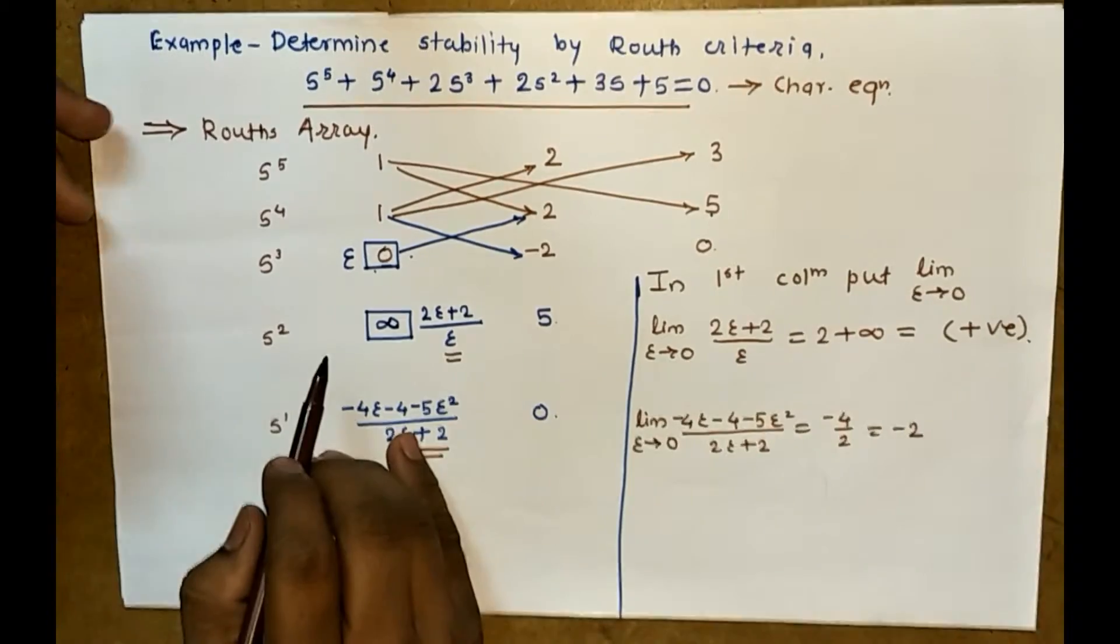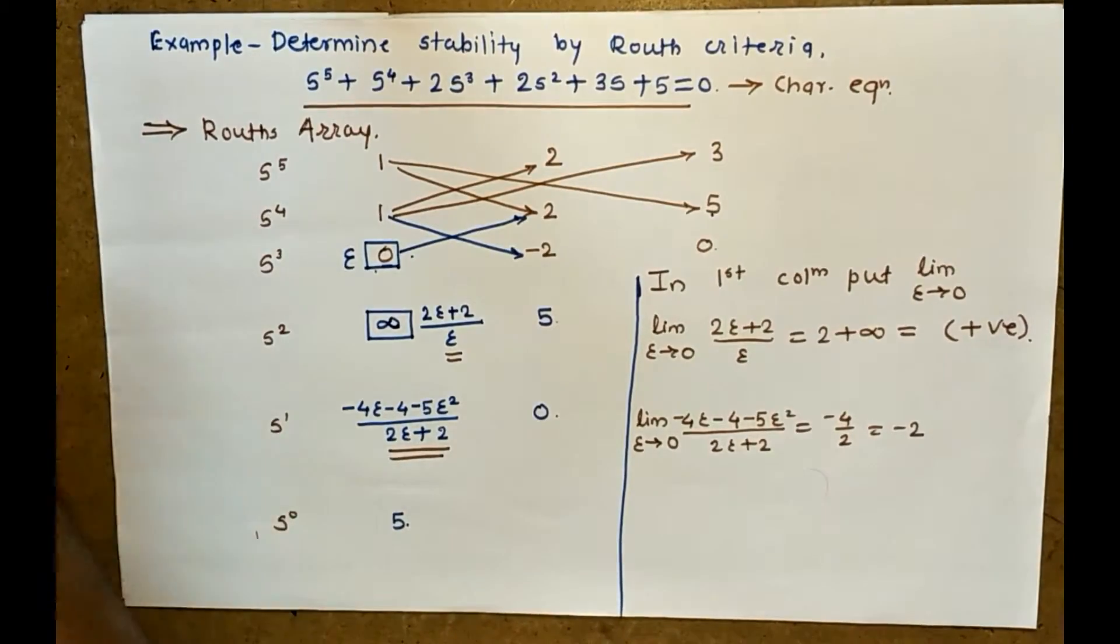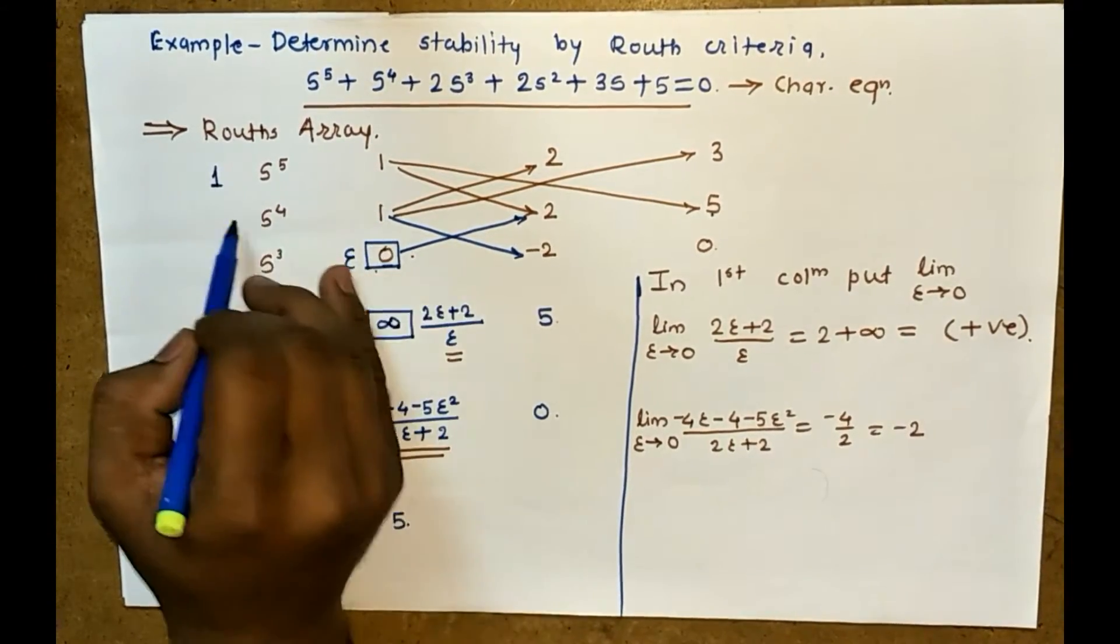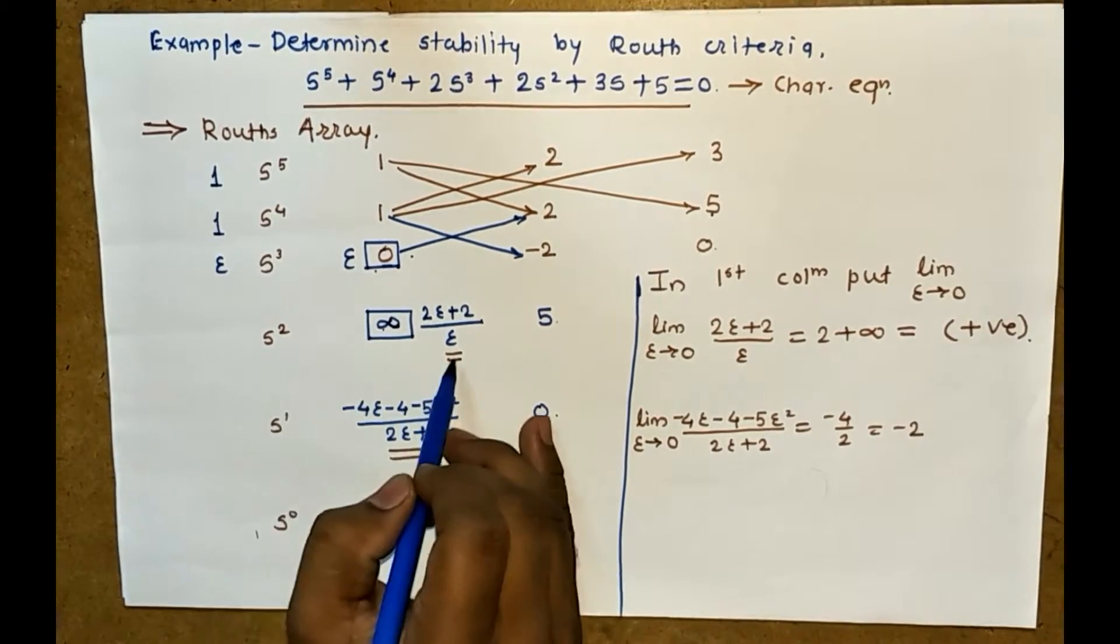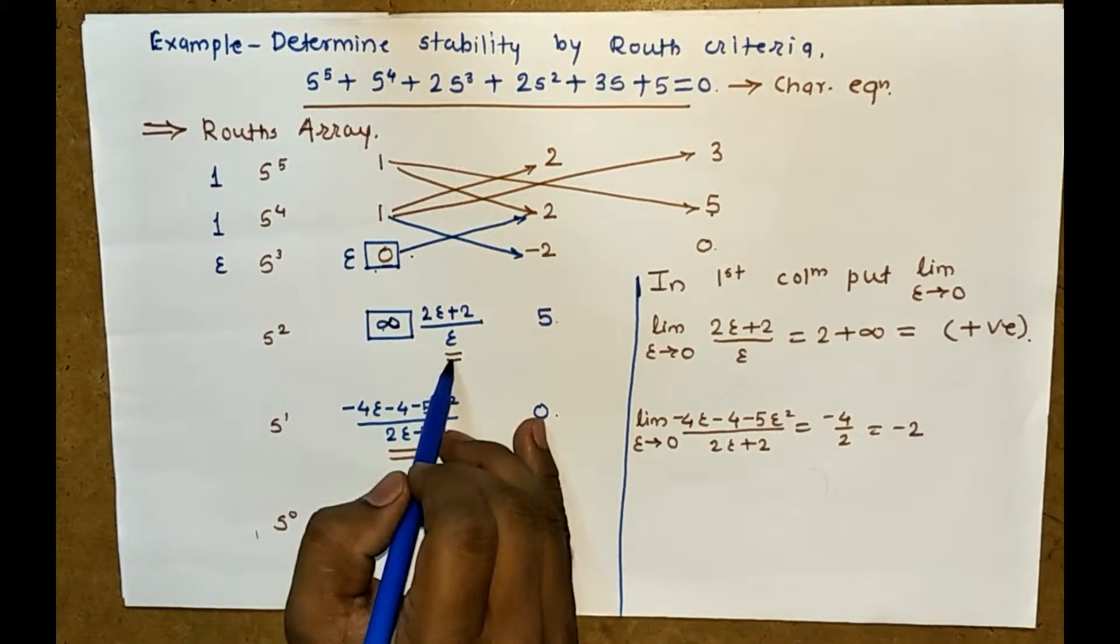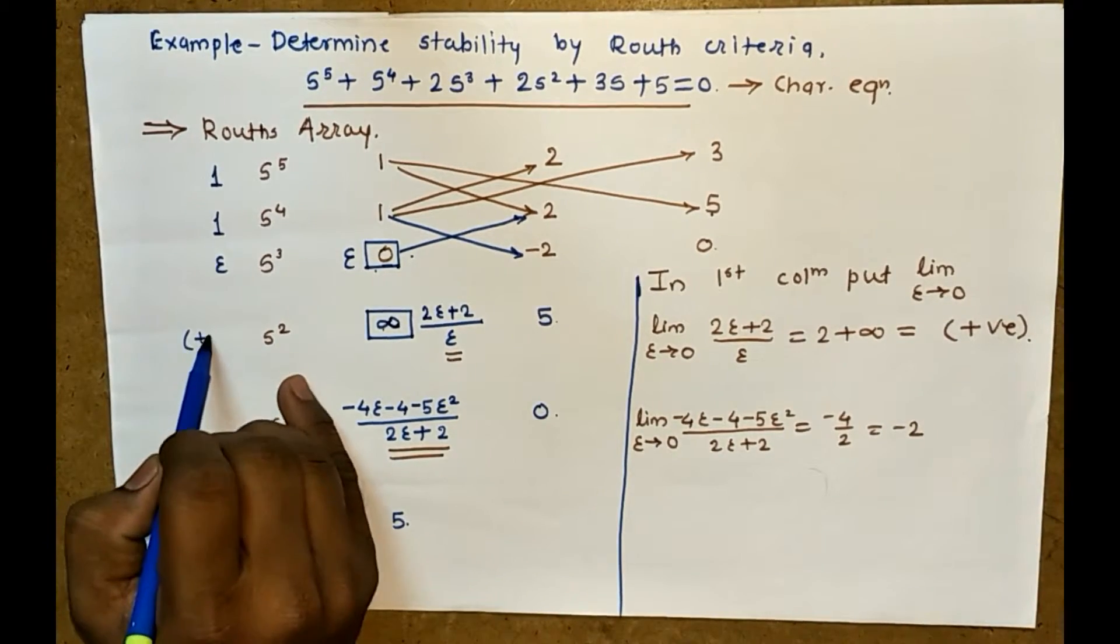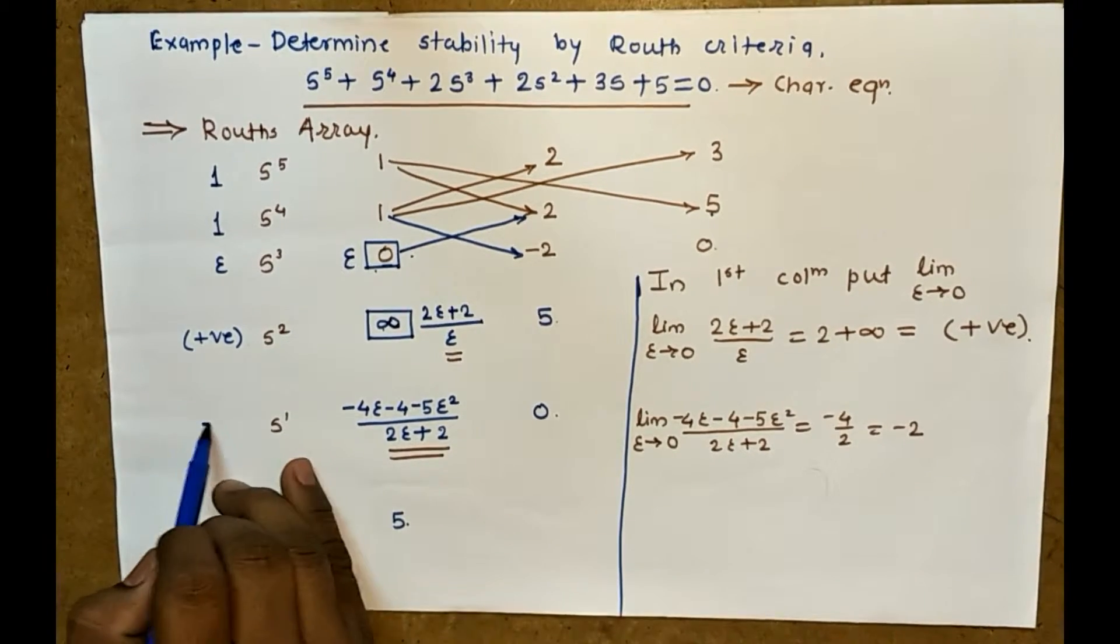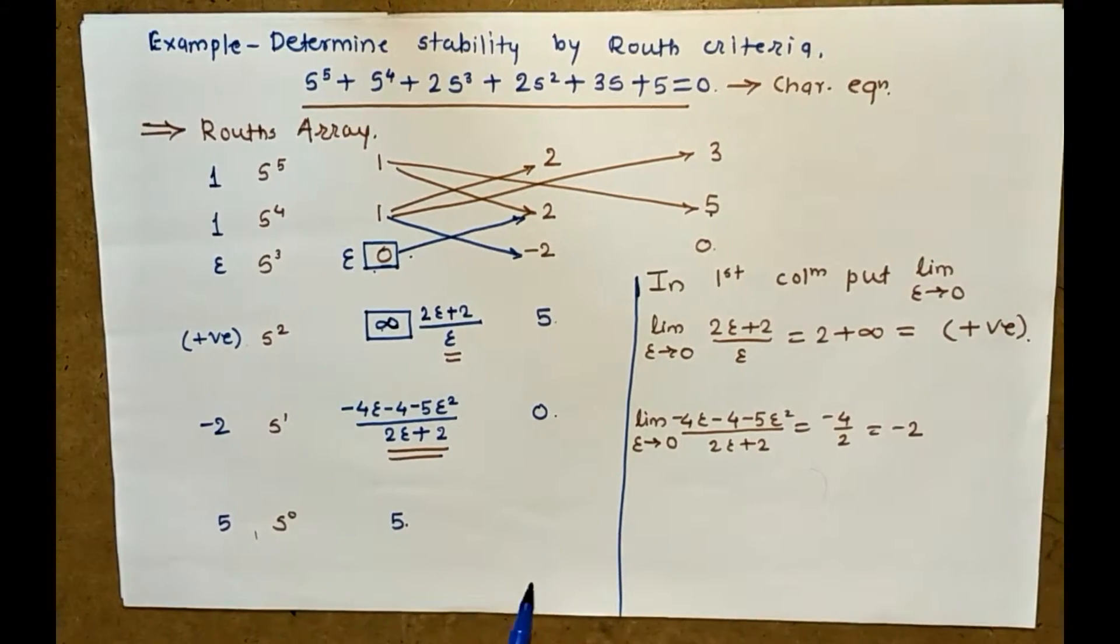Now we have to put this value in the first column. Now rewrite the first column of Routh array. That is 1 as it is, again 1 as it is, here epsilon, here the value of 2 epsilon plus 2 divided by epsilon is positive value. The value of this is minus 2, here 5 as it is.